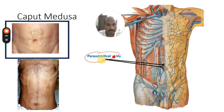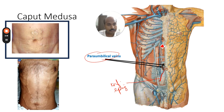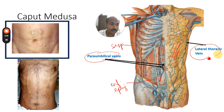In portal hypertension, increased pressure in the portal veins causes the para-umbilical veins — which communicate with the portal veins — to dilate. When dilated, they communicate through collaterals into systemic veins such as the inferior epigastric vein and the superior epigastric vein found within the rectus sheath. Beyond these, there are also superficial veins in the superficial fascia of the abdomen, including the lateral thoracic vein draining into the axillary vein.